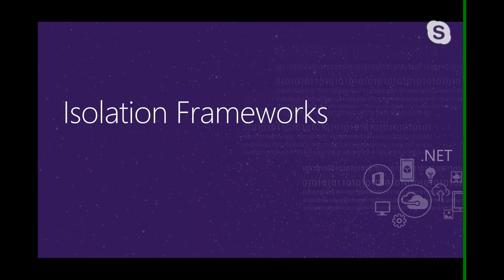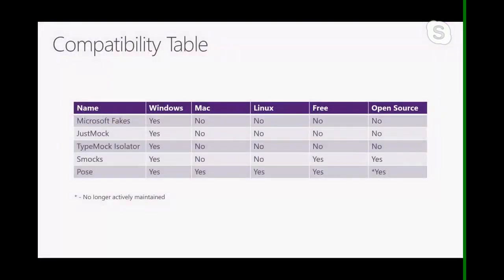The next category is isolation frameworks — think of them as mocking frameworks plus plus. Typically, mocking frameworks are limited because they can only mock things that can be extended by the regular C# language — so they can mock interfaces and virtual methods. But when it comes to static methods, concrete classes, and sealed classes, mocking frameworks fall short. That's where isolation frameworks come in.